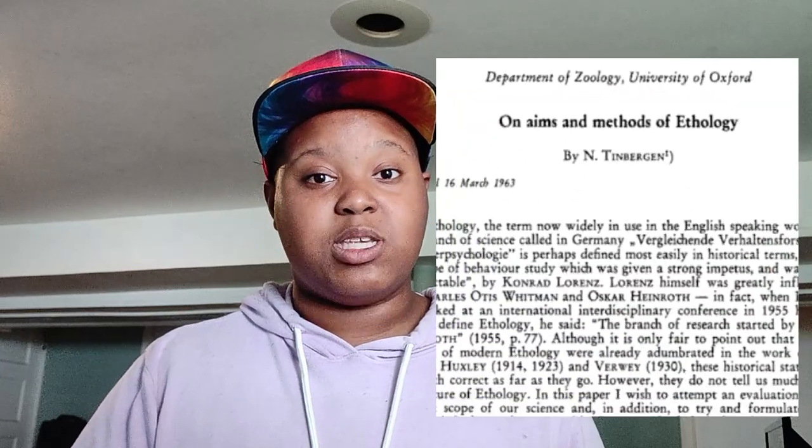Luckily for us, back in 1963, Nicholas Tim Bergen, one of the founders of Ethology alongside Konrad Lorenz and Karl von Fritz, wrote a paper called On the Aims and Methods of Ethology. This paper established four types of questions to ask when researching animal behavior, and these four question types are still used today as guidelines for developing questions and hypotheses for animal behavior research.